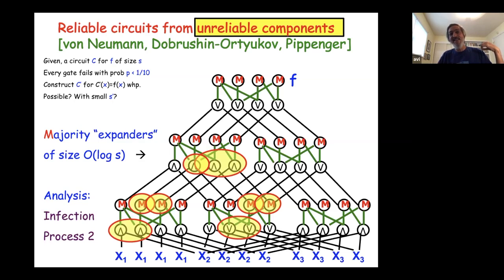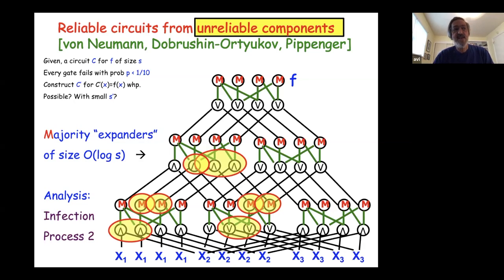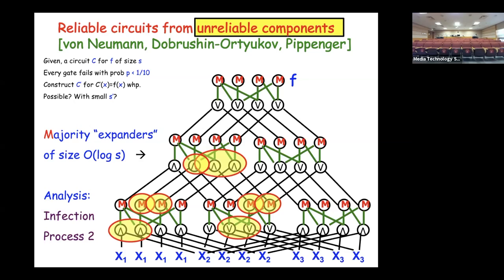In the 1960s, the transistor replaced vacuum tubes and reliability problems disappeared — this work was forgotten. But the problem came back 25 years ago when people started trying to build quantum computers. Due to the theoretical power of quantum computing, and because in all technologies it's very hard to avoid errors, people are building error-correcting and fault-tolerant mechanisms for quantum computers. Ideas like this are being used there, but much more.